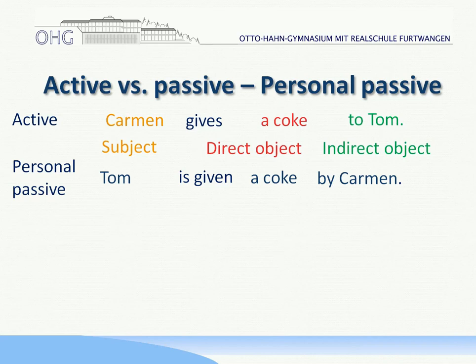Tom is given a coke by Carmen. Tom is the new subject, a coke is still the direct object, and by Carmen is the new indirect object. That means that subject and indirect object swap places. The predicate of course changes in the normal active to passive way. Indirect object and subject swap places, and then Carmen, the subject from the active sentence, needs the preposition 'by'. This is called the by agent.